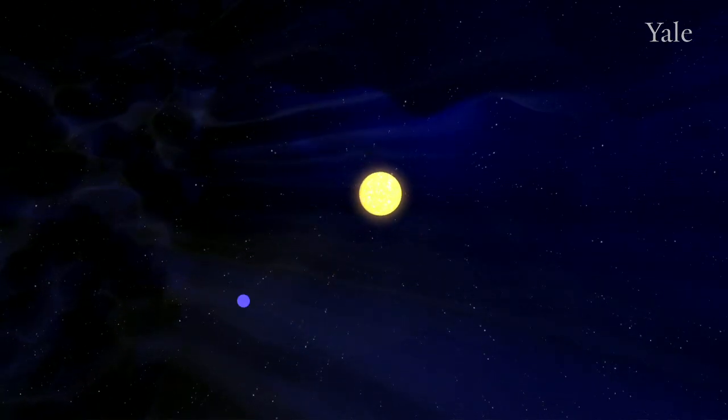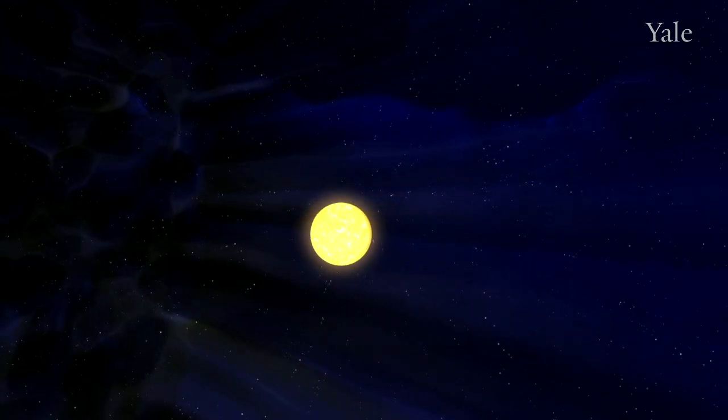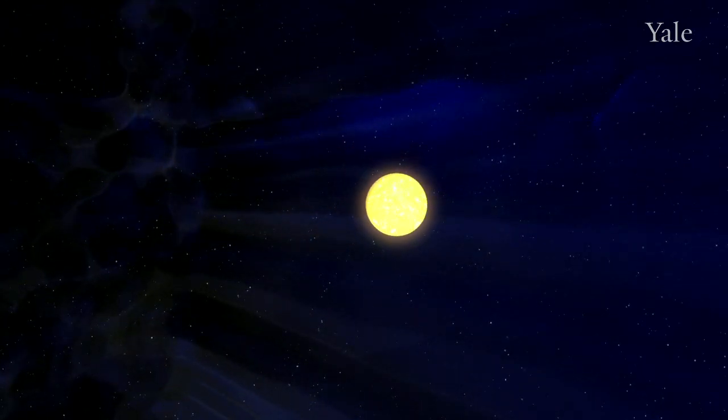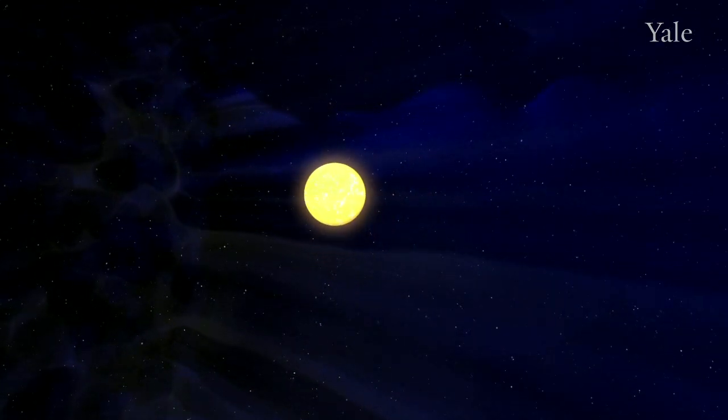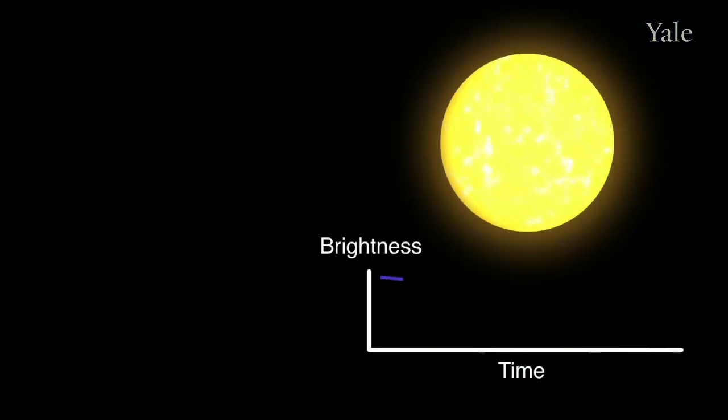There are a few techniques to find extrasolar planets, planets orbiting other stars. The technique that I use is called the Doppler technique, and basically as the planet orbits the star, it causes the star to wobble around a common center of mass with the planet. So we can't see the planet with my technique, but we see the star wobbling toward us and away from us.